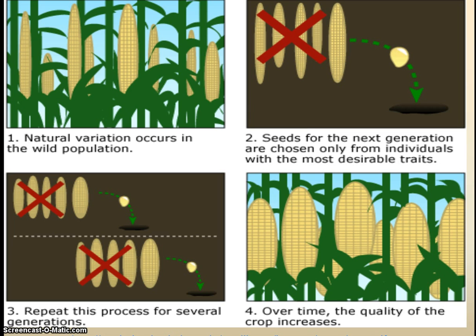In doing this, we've artificially selected what we want as far as ears of corn go. The same process applies to dogs and cats and livestock, other plants we use for food, and ornamental plants. This is how all of these things have come to be.